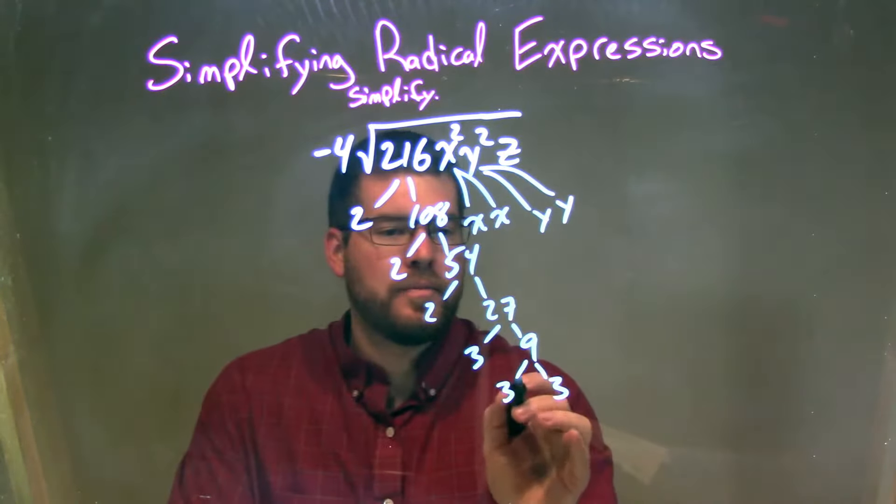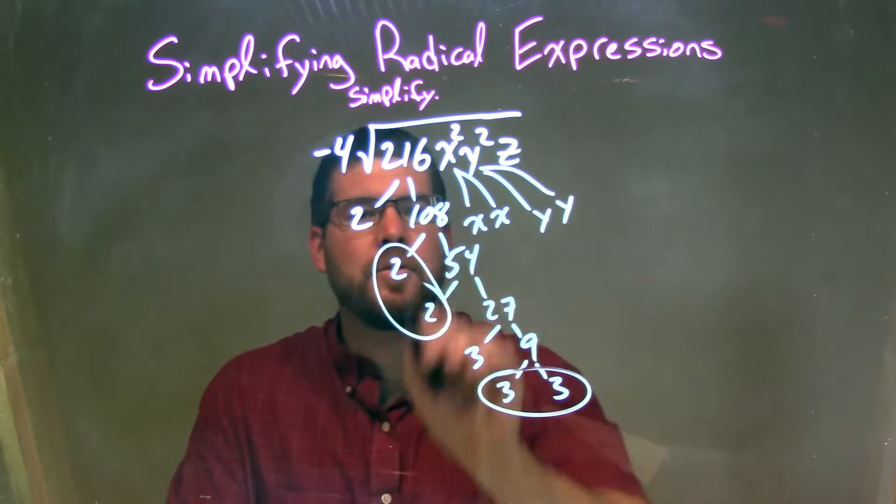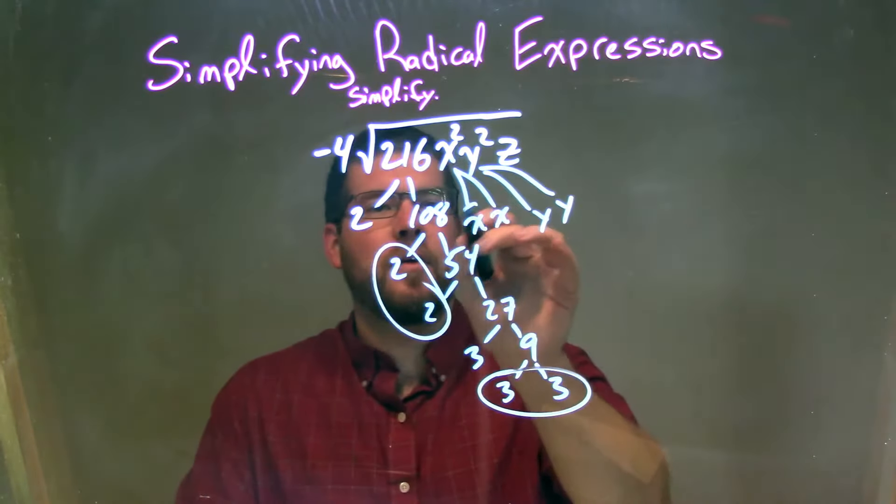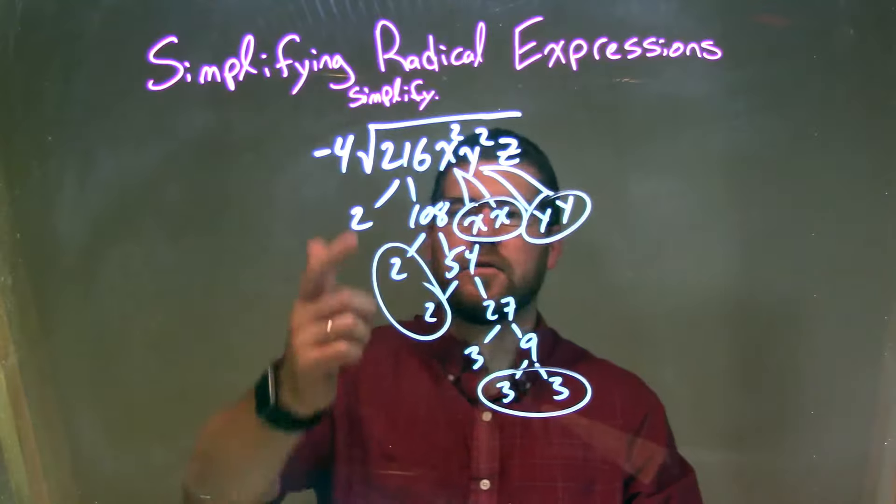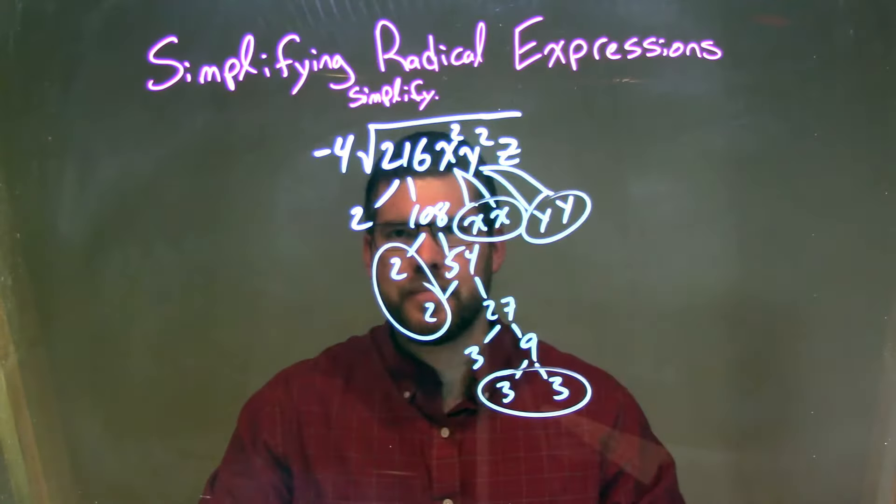So now I'm going to circle my pairs. A pair of 3's and a pair of 2's. I also have a pair of x's and a pair of y's. Singles are 2, 3, and z.